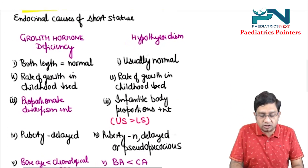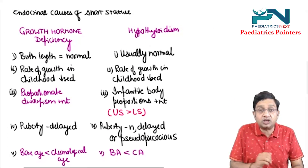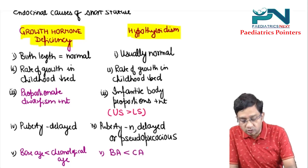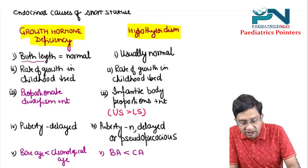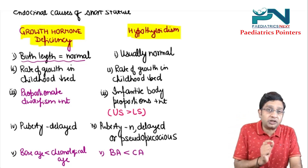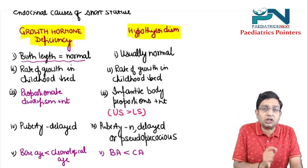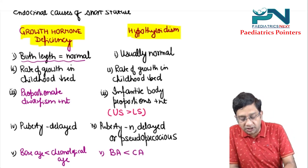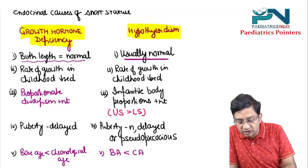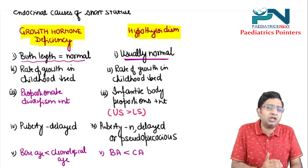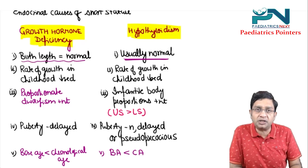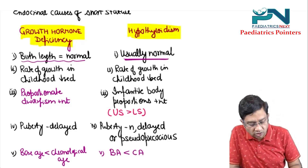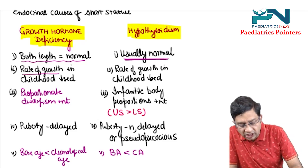Now considering the two endocrinal causes of short stature: one is Growth Hormone (GH) deficiency and the other is hypothyroidism. In both, the birth length is normal. An important point to remember is that growth hormone has no role in the intrauterine period. In hypothyroidism, although skeletal growth in the intrauterine period depends on thyroxine, birth length is usually normal.